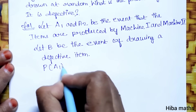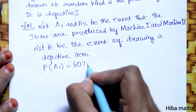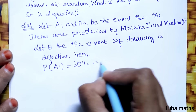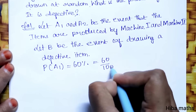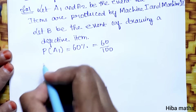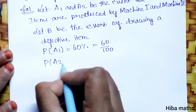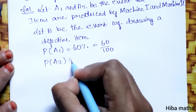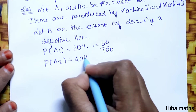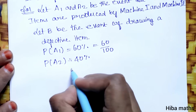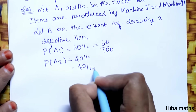The conditions given: P of A1 is 60%, which is 60 by 100. A2 is Machine 2, which produces 40% of items, so P of A2 is 40 by 100.